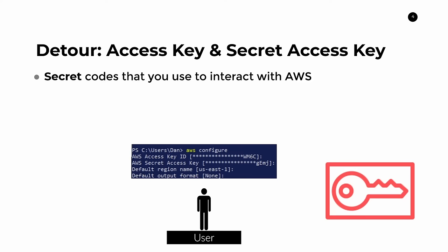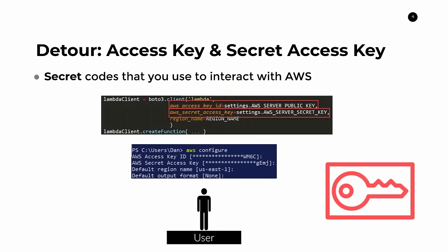The third way — programmatically — is probably the most common for those building applications. If you're using Python, this is what it looks like: you create a Lambda client using Boto3, the SDK library, passing in your AWS access key ID and secret access key as constants, along with region information, before finally calling lambda_client.create_function(). Those are the different ways you use your credentials to interact with AWS, and the policy document is evaluated whenever you try to perform certain actions.